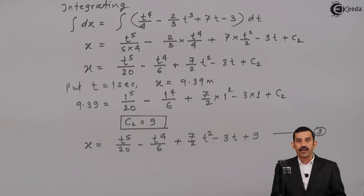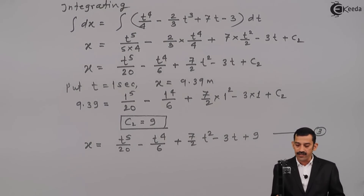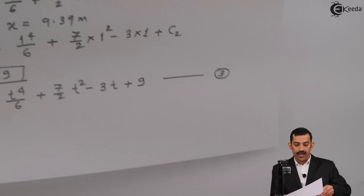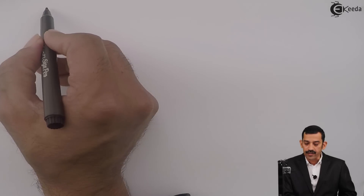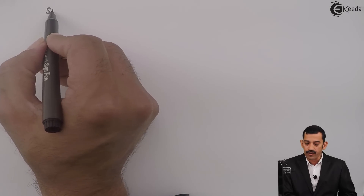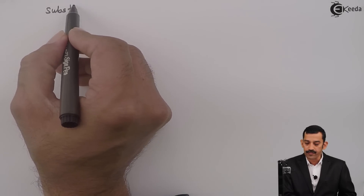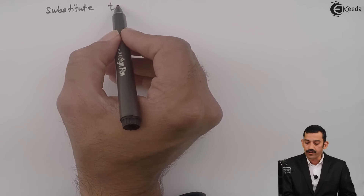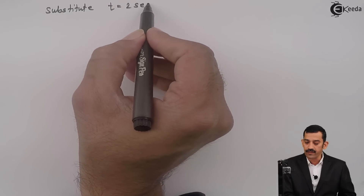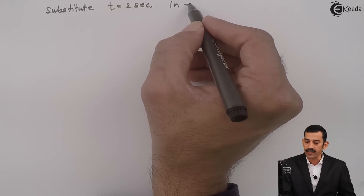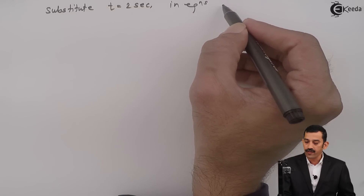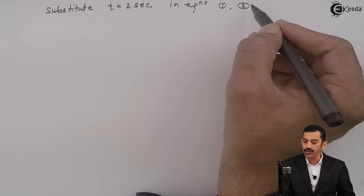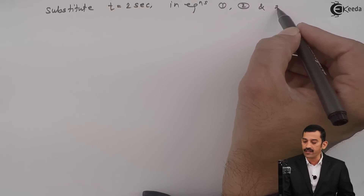Now, what is the problem asking? At t = 2 seconds, find displacement, velocity, and acceleration. The equations are ready — we simply substitute t = 2 seconds into Equations 1, 2, and 3 one by one to get the direct answers.